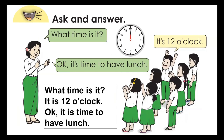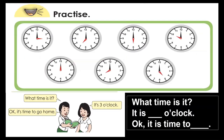Now we're going to ask and answer: what time is it? Look at the clock — it's twelve o'clock. It's time to have lunch. Let's practice together. What time is it? It's twelve o'clock. What time is it? It's three o'clock — it's time to go home. What time is it? It's seven o'clock — it's time to have dinner.